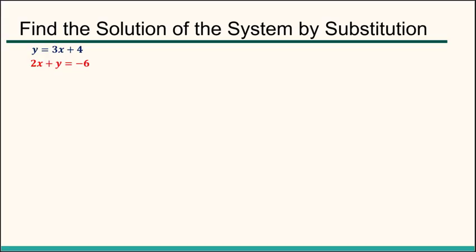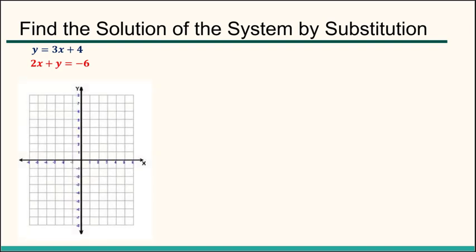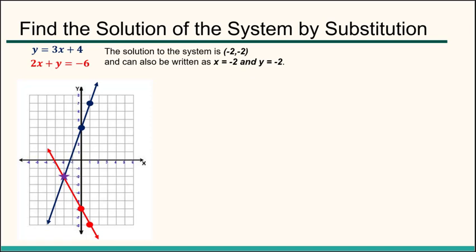First up we have a couple of equations, and I'm just using the same exact equations that we used in our last lecture where we were solving the system by graphing. This is what we ended up with. We ended up with two lines that crossed at the point negative 2, 2. So the solution can be written as x equals negative 2 and y equals negative 2. Our two equations are y equals 3x plus 4 and 2x plus y equals negative 6.